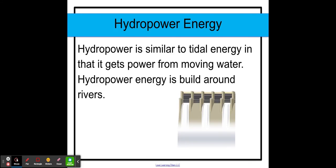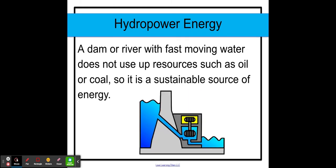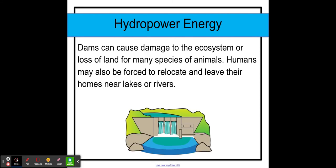Next up is hydropower energy. Hydropower is similar to tidal energy in that it gets power from moving water. Hydropower energy is built around rivers, and a dam or river with fast-moving water does not use up resources such as oil or coal, so it is a sustainable source of energy. Although it is sustainable, dams can cause damage to the ecosystem or loss of land for many species of animals. In some instances, humans may also be forced to relocate and leave their homes near lakes or rivers.